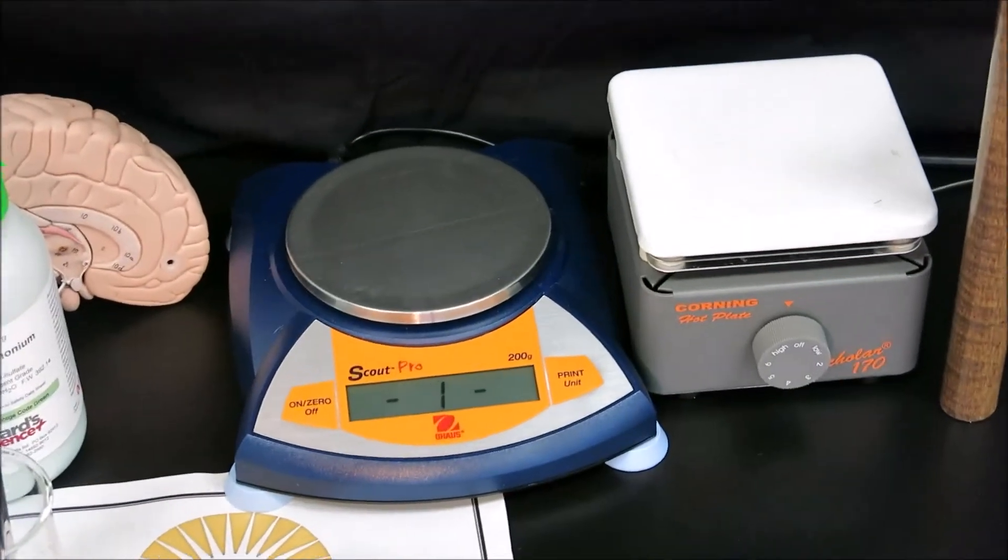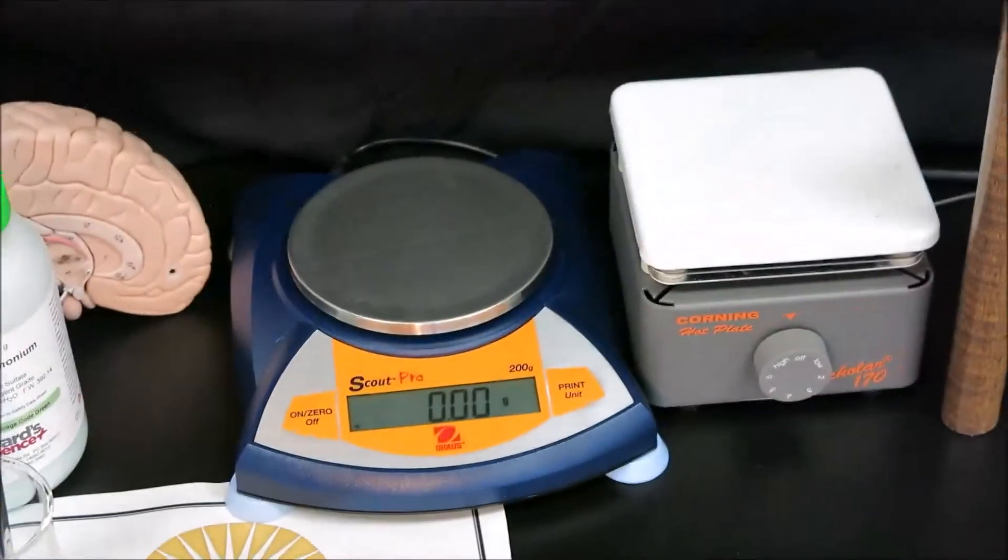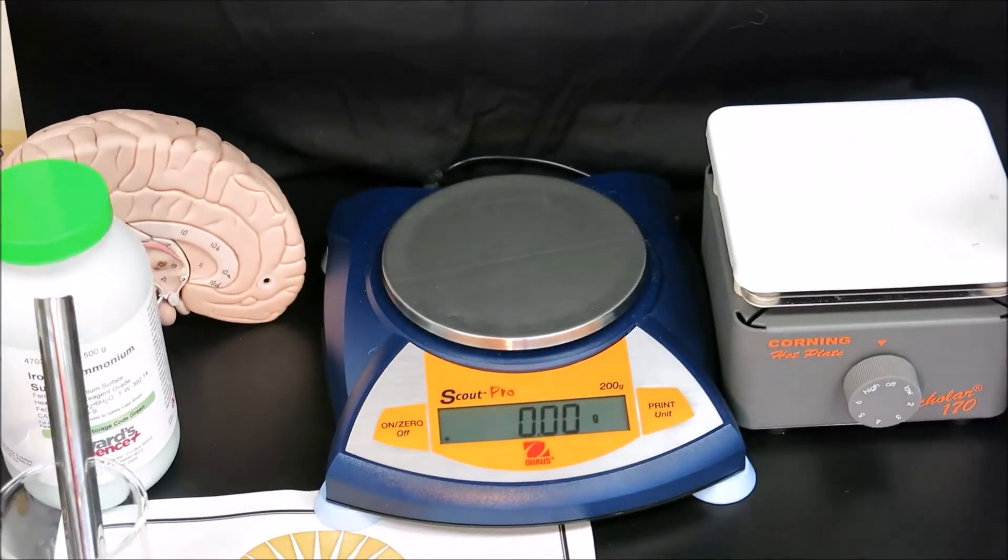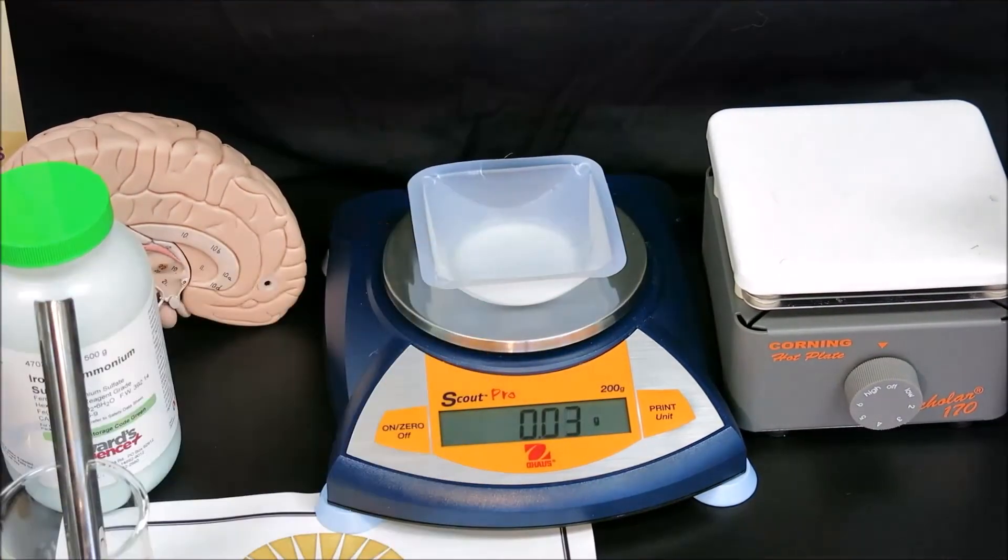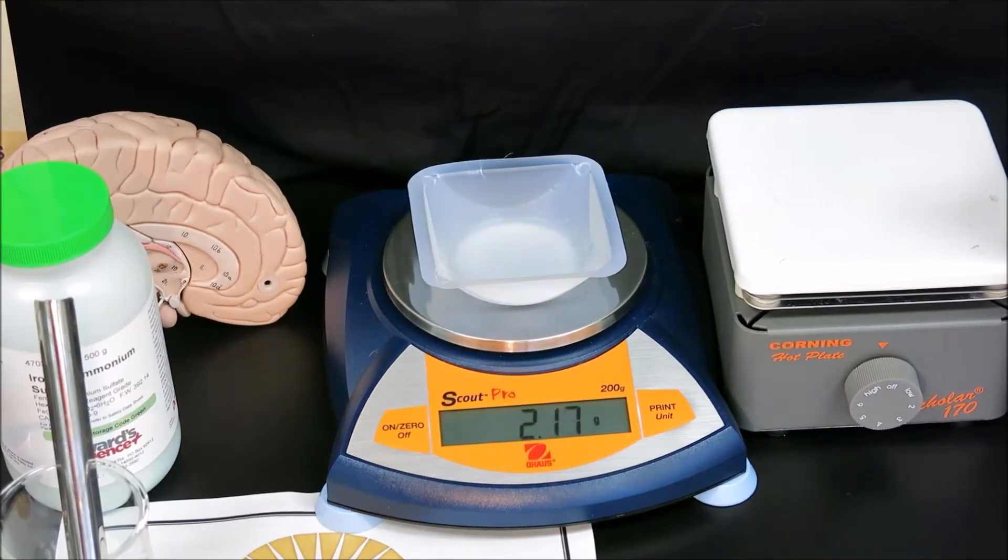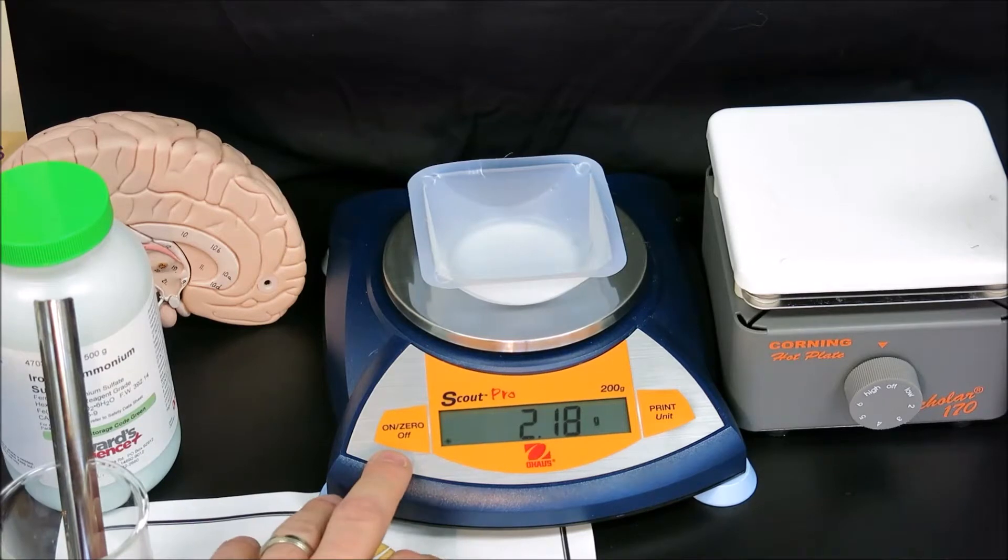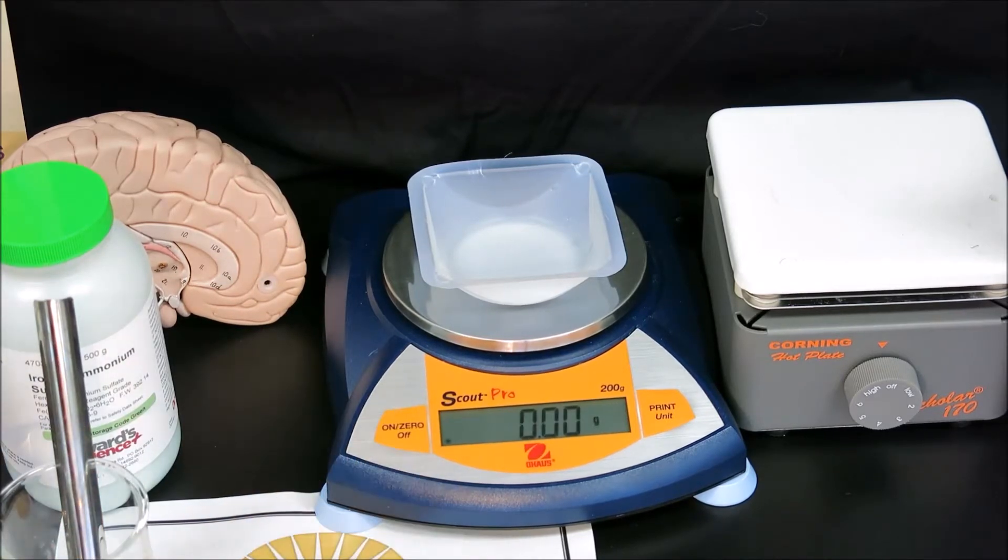or zero the scale, in order for it to record only the mass of the solid and not the weigh boat. The weigh boat has a mass of 2.18 grams. We'll hit zero or tare, and that zeros the scale. Now we can add our solid.